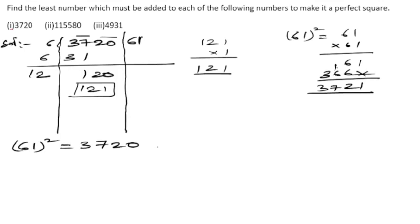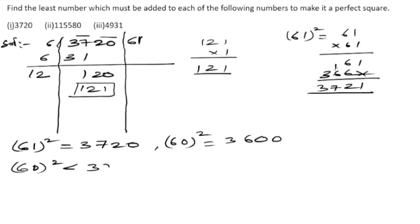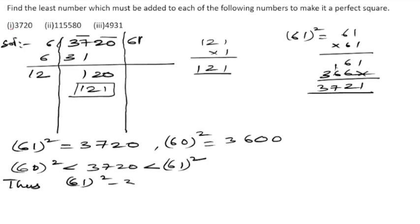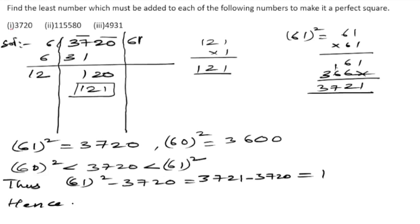60 squared gives 3600 with double zeros for the single zero. So 3720 lies between 60 squared and 61 squared. The nearest perfect square is 61 squared. To find the number required to be added: 61 squared minus 3720.